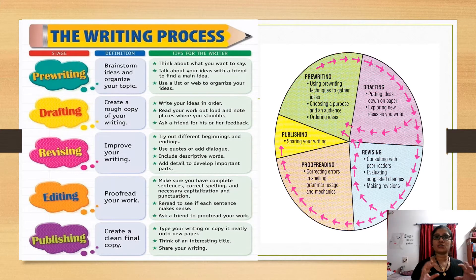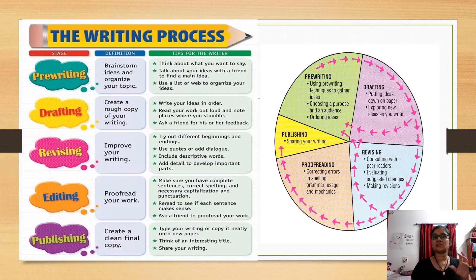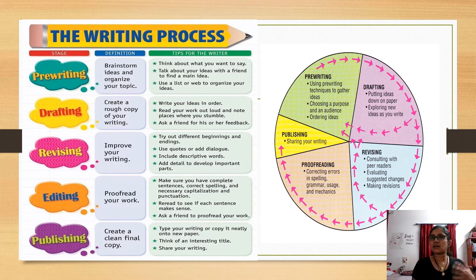The next stage is drafting — creating a rough copy of your writing. Once you have done the pre-writing and collected your points, you make them into a paragraph. That stage is called drafting; it is rough work, not the final copy. The tips here are: write your ideas in order to avoid confusion, read your work aloud, and note places where you stumble.